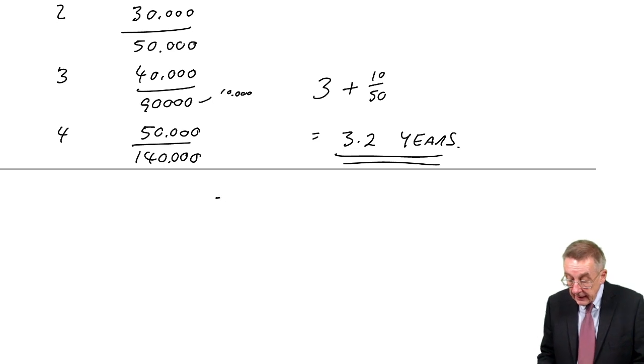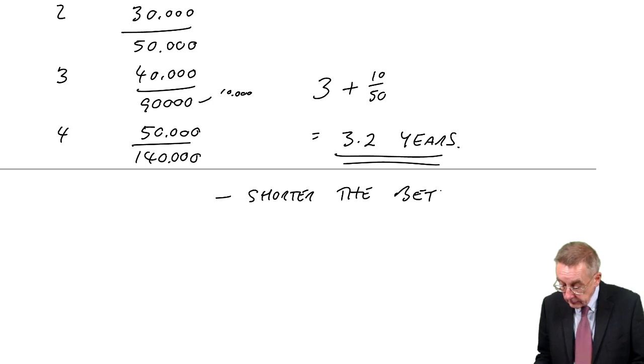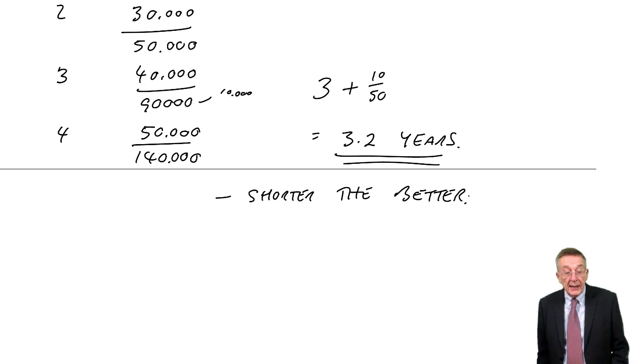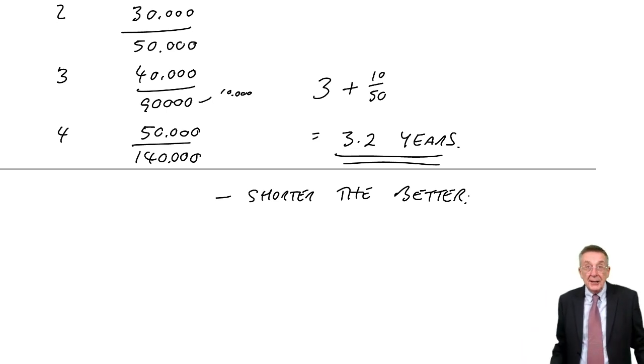That's how long it looks like it's going to take to get the money back. As I said earlier, the shorter that is, the better, because the further into the future you're estimating, the more uncertain you're going to be. If this one was going to take 10 years to get the money back, I'd be frightened that we might never get it back because that estimate for 10 years time will be little more than a guess.